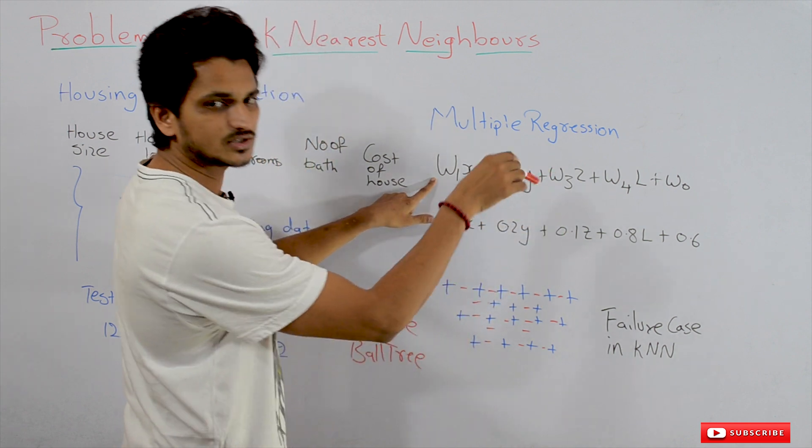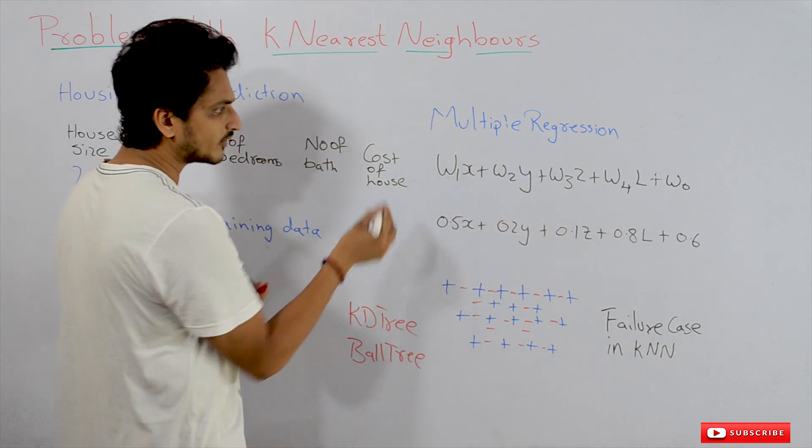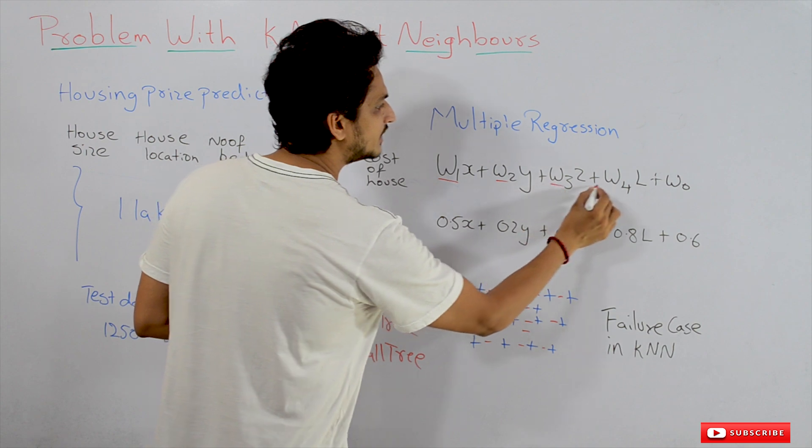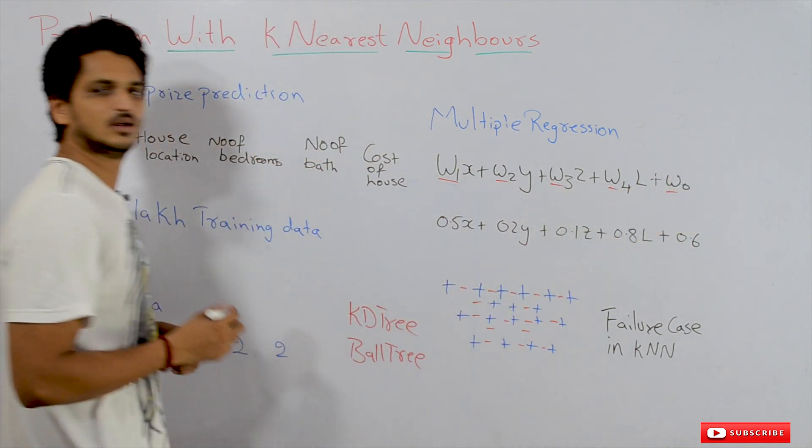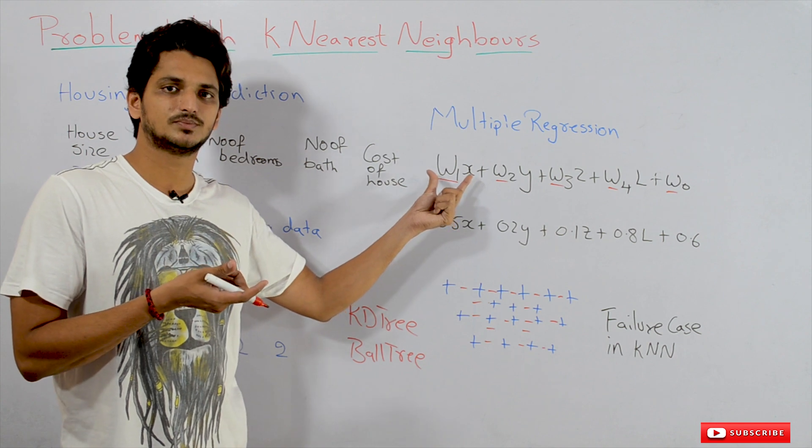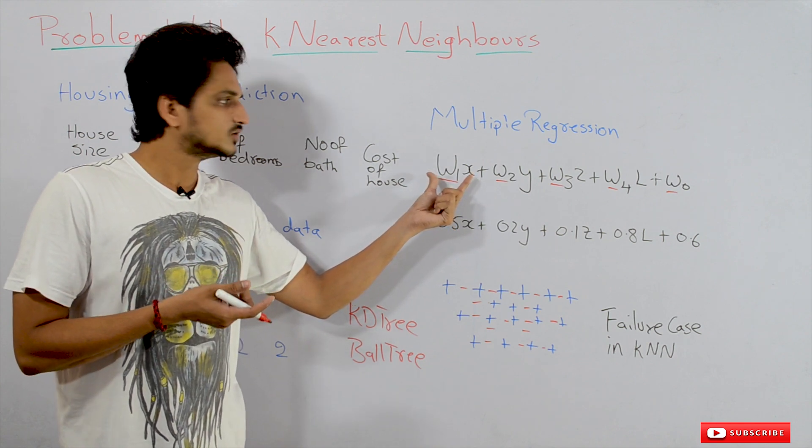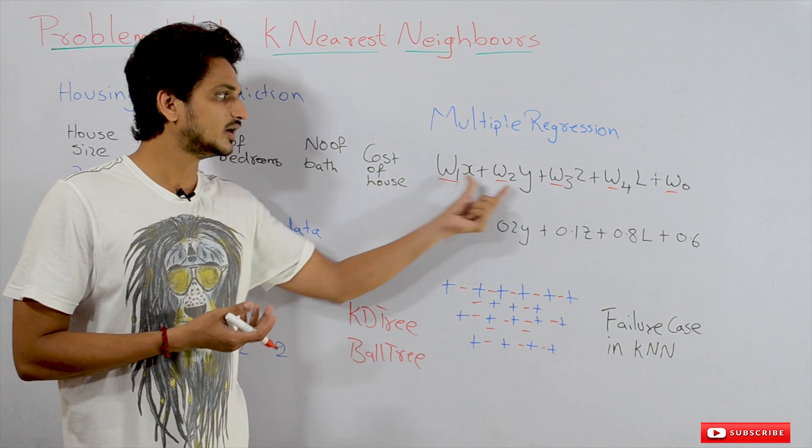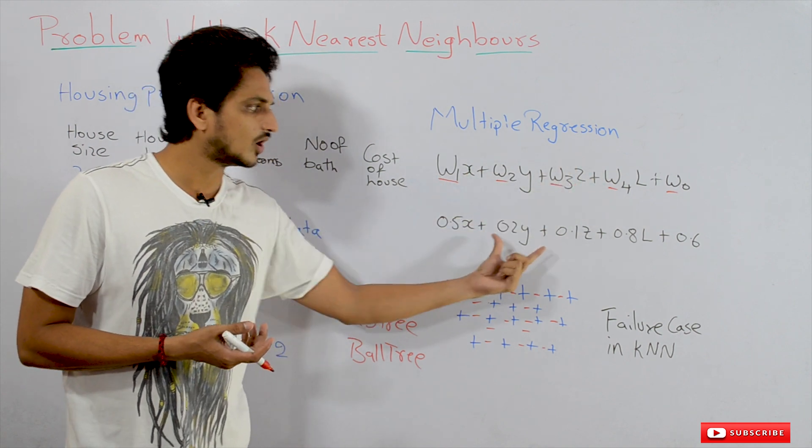w0 is the intercept term. Our model will identify these values w1, w2, w3, w4, which we call parameters. Assume that our model has identified all these parameter values.